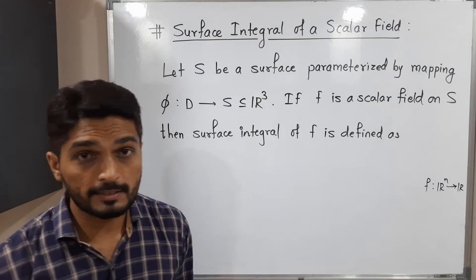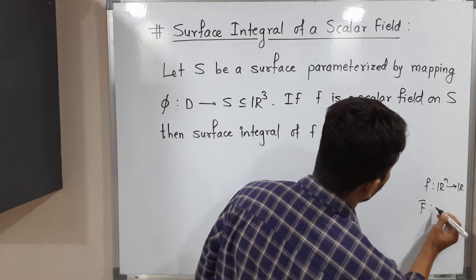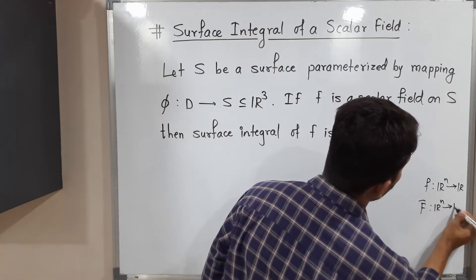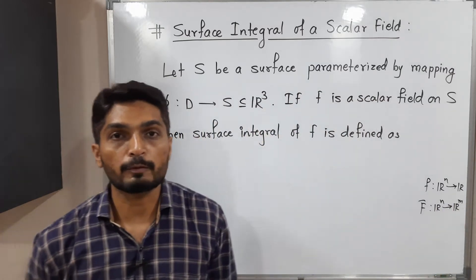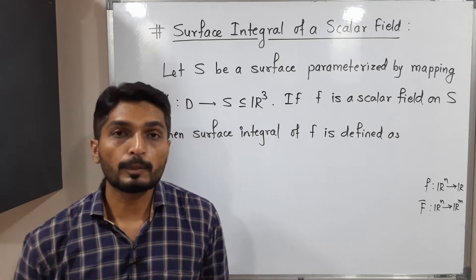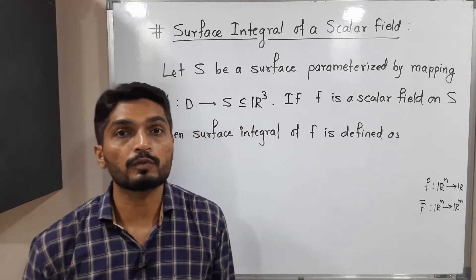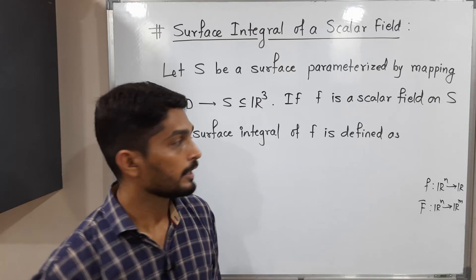And if we have a function f bar from R^n to R^m where m is greater than 1, that means if codomain is R^m, we call it as a vector field. So suppose you have a scalar field, let us see how to find its surface integral.